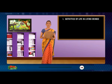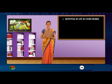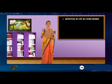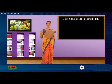Unit 1: Activities of Life in Living Beings. Every living organism begins life as a single cell. Unicellular organisms may stay as one cell but they grow too. Multicellular organisms add more and more cells to form more tissues and organs as they grow.